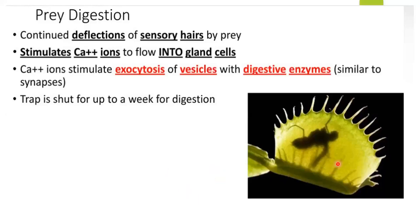As the prey continuously deflects the sensory hairs, this keeps the calcium ion channels stimulated. Calcium ions keep flowing into the glands, and the calcium ions then stimulate exocytosis of vesicles containing the digestive enzymes — similar to how calcium ions were involved in exocytosis of neurotransmitter vesicles at synapses, but here the vesicles contain digestive enzymes. The trap remains sealed for about a week for digestion.